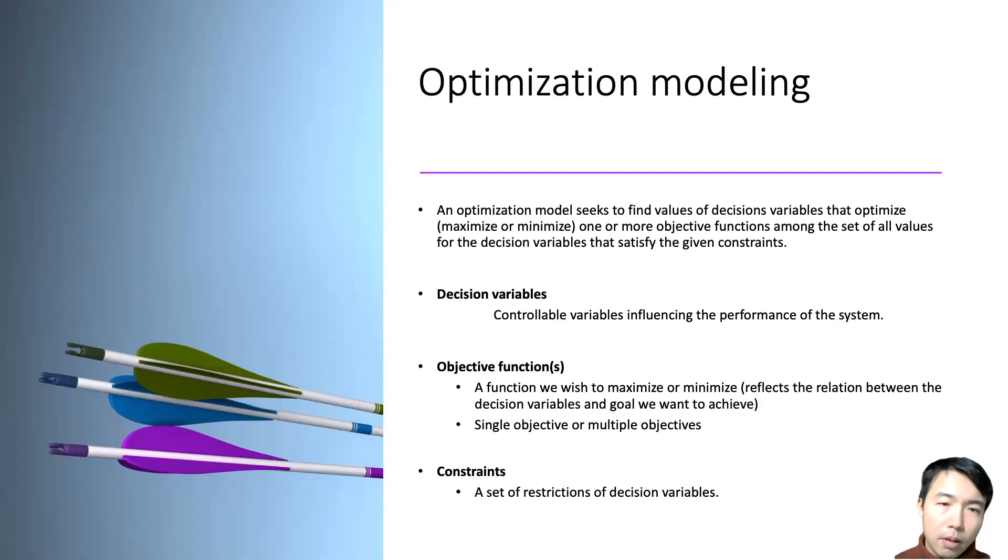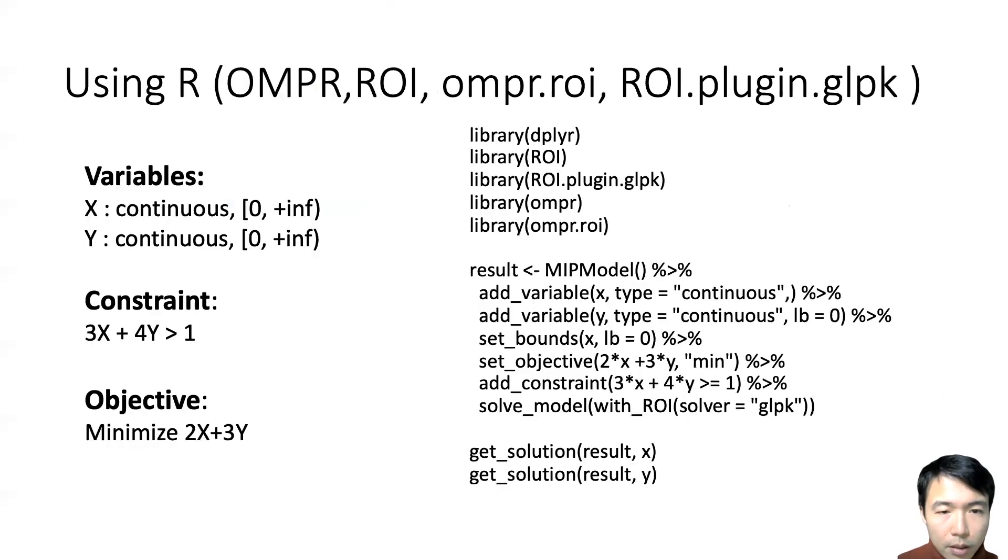Optimization modeling has three parts. First is the decision variables, which are also called controllable variables that influence the performance of the system. Most optimization modeling problems have an objective or multiple objectives. The objective function is a function we wish to maximize or minimize, reflecting the relation between the decision variables and the goal we want to achieve. Optimization modeling also has constraints, a set of restrictions on variables.